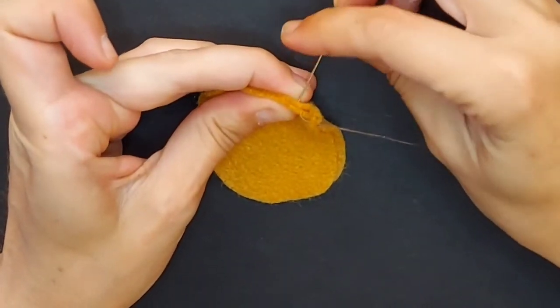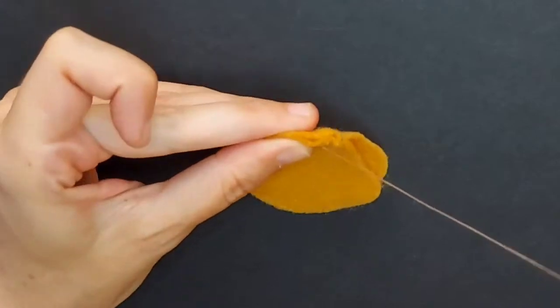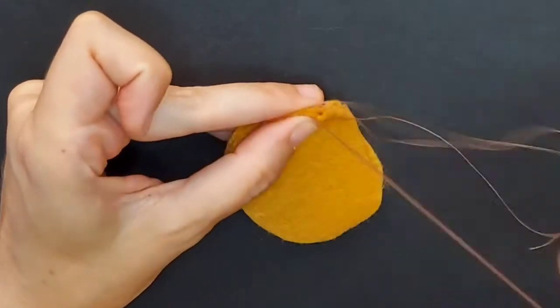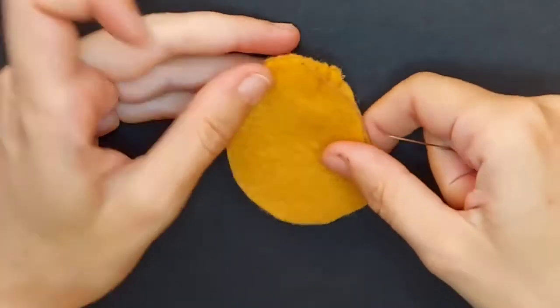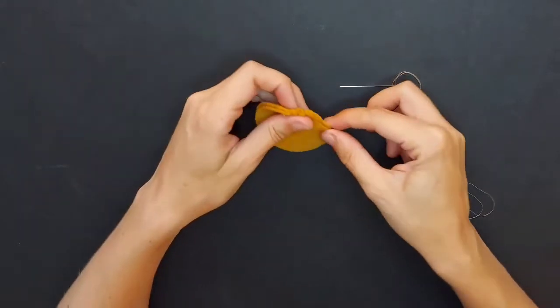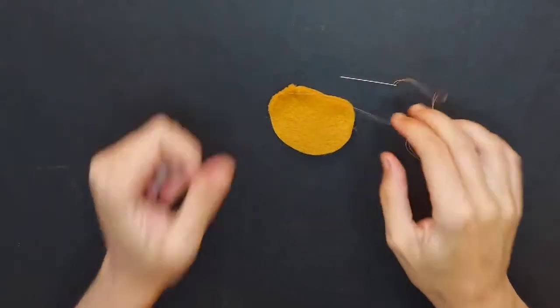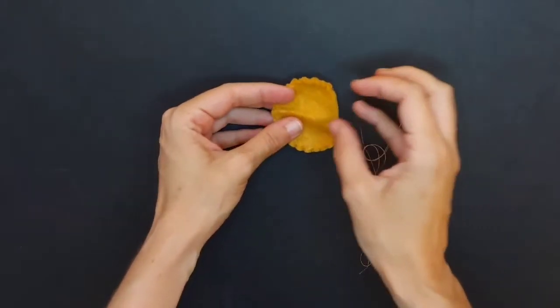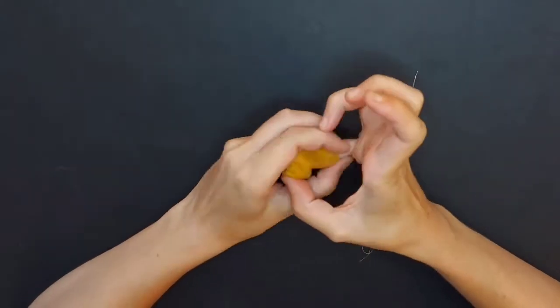Once I flipped it, just keep doing that all the way around. It will look like your pieces are not matching up, but when you get to the very end it should all work out. You'll just want to leave yourself some space for stuffing.